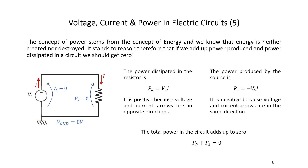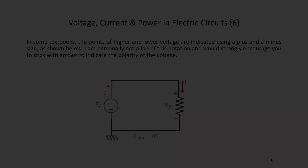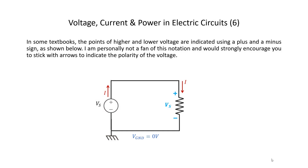Note that the voltage and current arrows for the source are in the same direction, and for the resistor they are in opposite directions — this is a very important point. Lastly, as a matter of notation: in some textbooks the points of higher and lower potential are indicated using a plus and minus sign rather than an arrow. I am personally not a fan of this notation and strongly recommend sticking with arrows to indicate the polarity of the voltage.